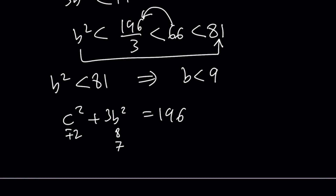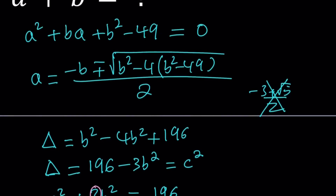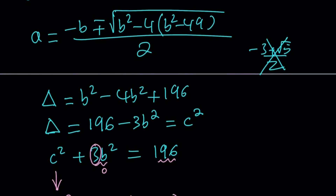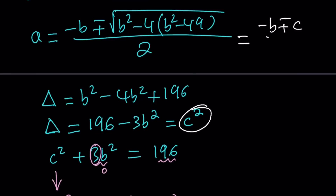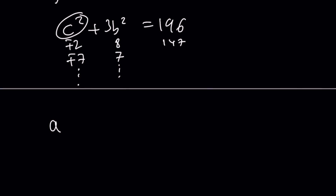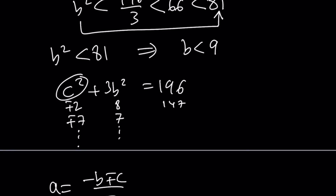For example, if b equals 7, then 3 times 49 is 147, and 196 minus 147 is 49, giving c equals plus or minus 7. If b equals 8, then 3 times 64 is 192, and c squared equals 4, so c equals plus or minus 2. Not all values of b will give perfect squares for c squared, so we just check each one. From a equals negative b plus or minus c over 2, these b and c values give us the a values.